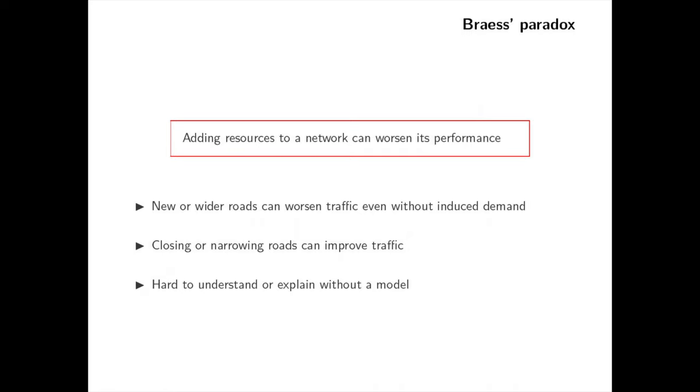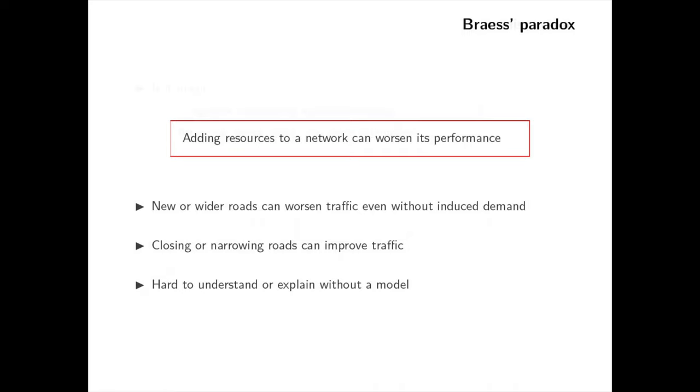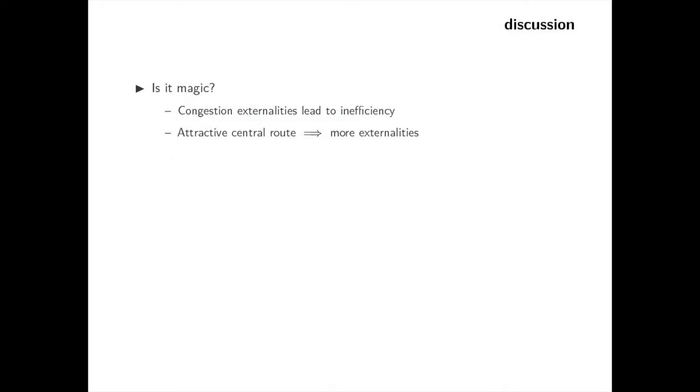It may sound counterintuitive at first, but there is a perfectly reasonable explanation behind it. First, when people choose a route, they only think of their own travel time. They ignore how they themselves are causing traffic for other drivers. If people ask their GPS for the route that creates less traffic, Braess's paradox would go away. But most people don't do that. Most people ask for the fastest route.